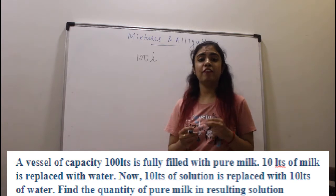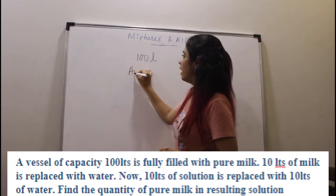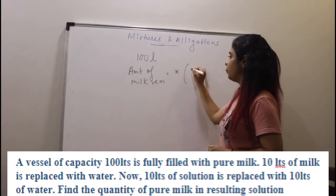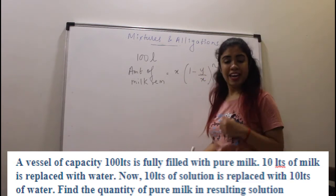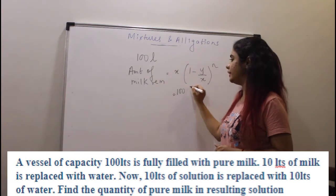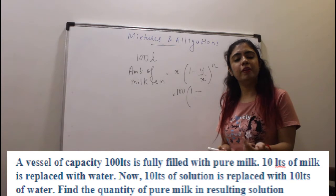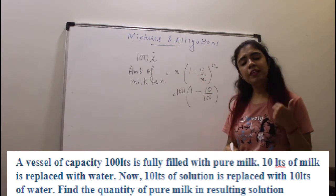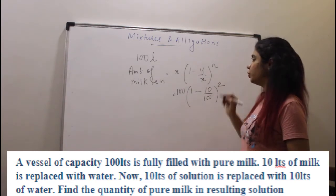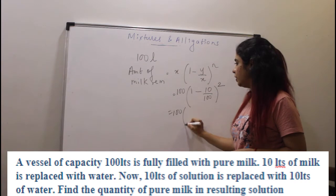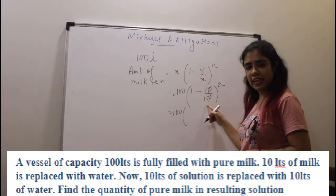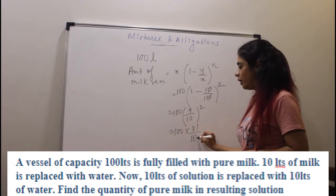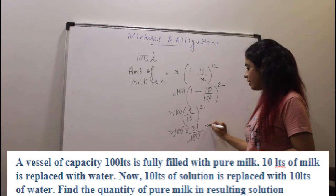From the previous video, the direct formula for this is: amount of milk remaining = X into (1 minus Y/X) raised to N, where X is your initial milk which is 100 liters, Y is the amount being replaced which is 10 liters, and N is the number of times you are replacing, which is 2. So this becomes 100 into (1 minus 1/10) squared, which is 100 into (9/10) squared, giving 100 into 81/100. The 100s cancel and your answer is 81 liters.